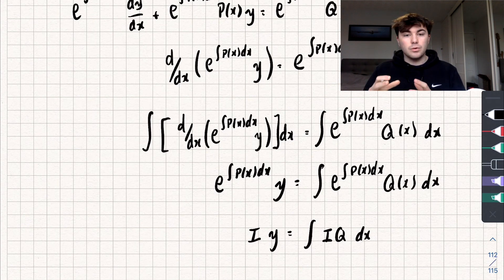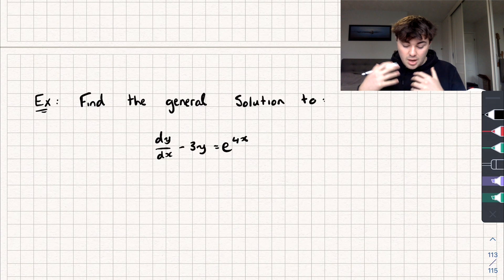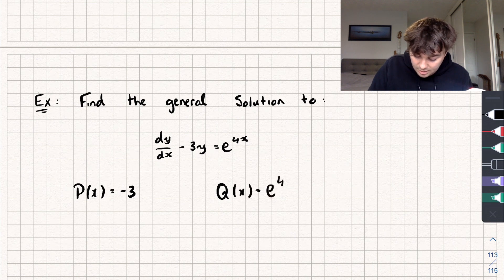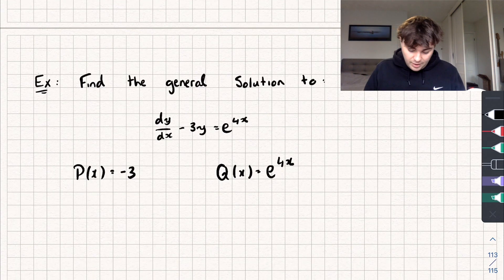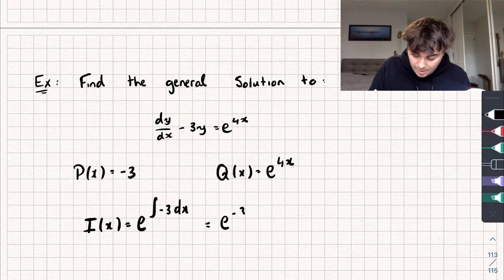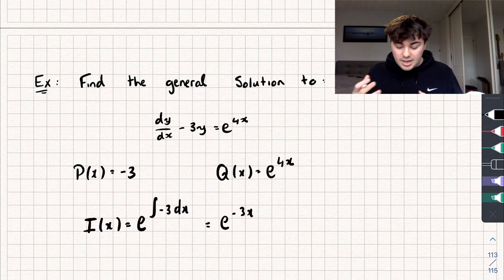Now let's use this integrating factor to answer a question. We need to find the general solution to the differential equation dy/dx minus 3y equals e to the power of 4x. In this example, p(x) equals negative 3 and q(x) equals e to the power of 4x. So let's calculate the integrating factor first: i(x) equals e to the integral of negative 3 with respect to x, which gives us e to the power of negative 3x. We don't need to worry about the constant of integration at this point — we'll deal with constants at the end. So our integrating factor is e to the power of negative 3x.